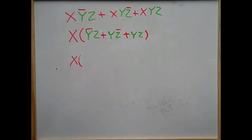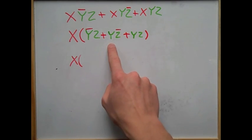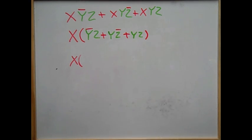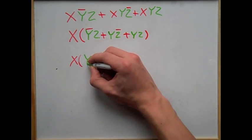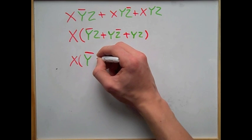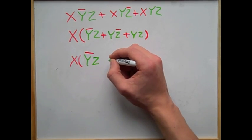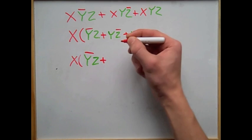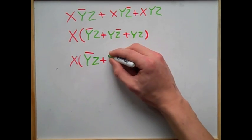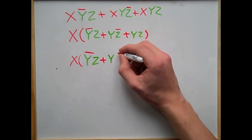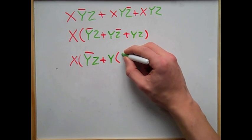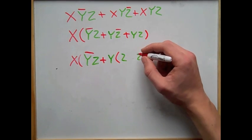So now we're going to continue by bringing the x down, and you see we have a common term of y among those. So we're going to pull the y out. But first we're going to write our not y and z. And we can't pull the not y out with it because it's not the same as a y. We have y on the outside, and on the inside of those parentheses we have two z's. We have a not z or z.